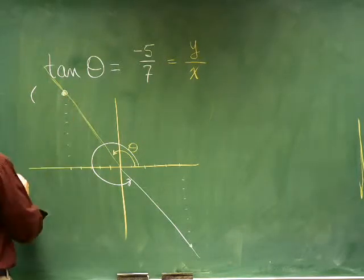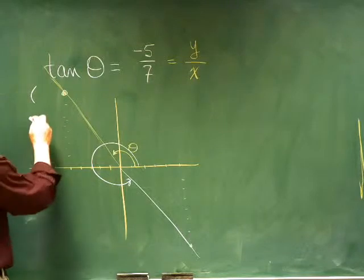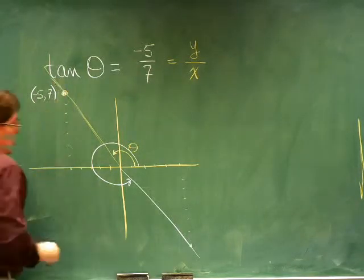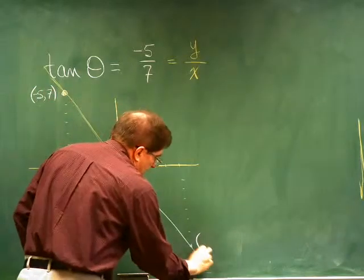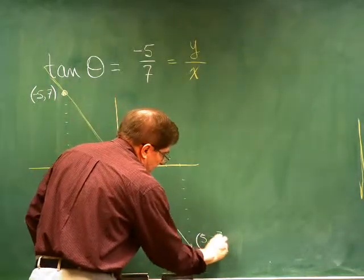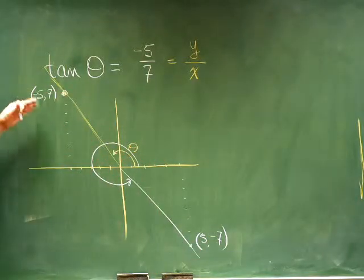Here is this terminal, a point on the terminal side could possibly be negative five, positive seven, or it could be down here at positive five, negative seven. So we would need to have some other information to know what was going on here.